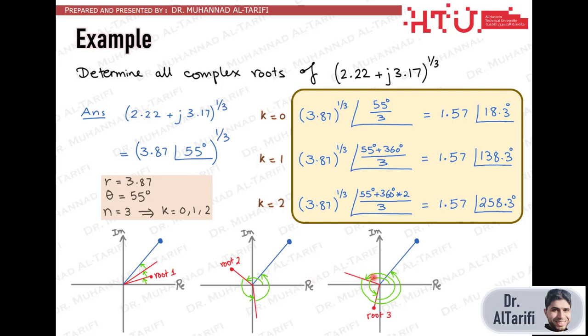While for the third root, two full rounds are completed before reaching the same blue vector again. Regardless of the path, all these roots yield to the same outcome when raised to the power 3, which makes them all valid root solutions to the same outcome.